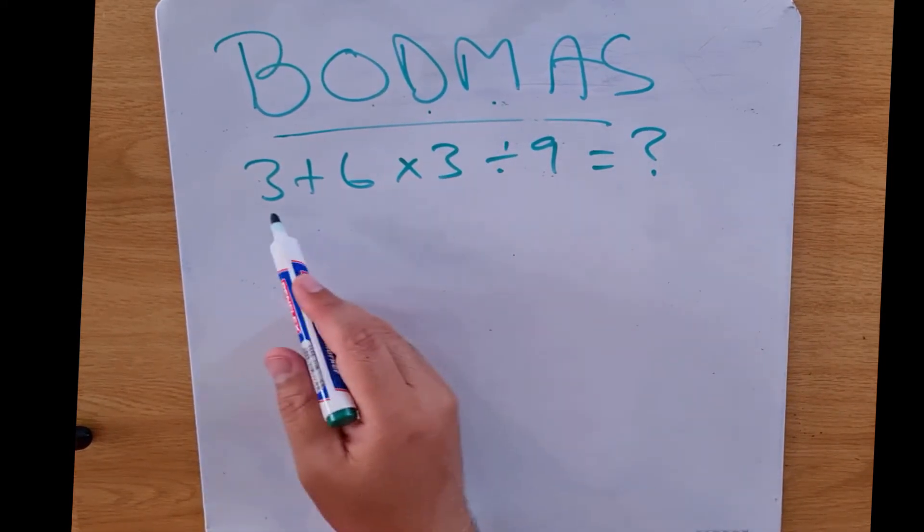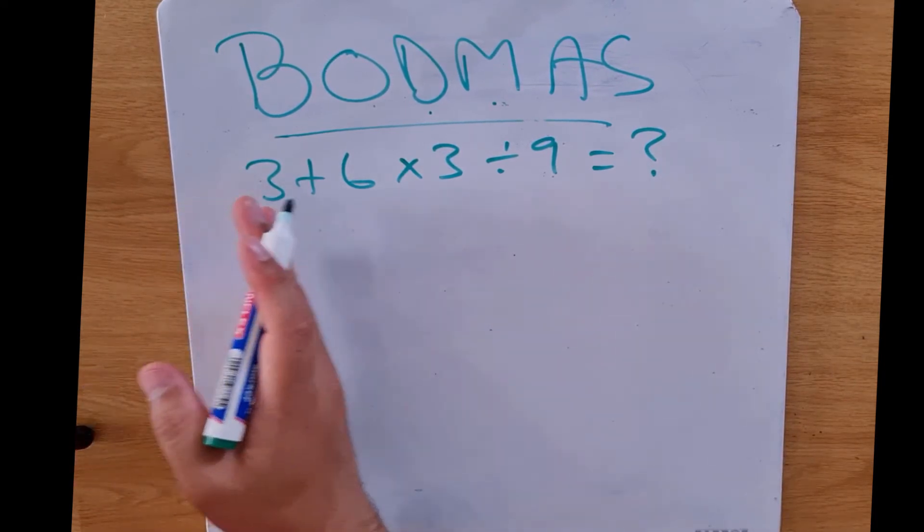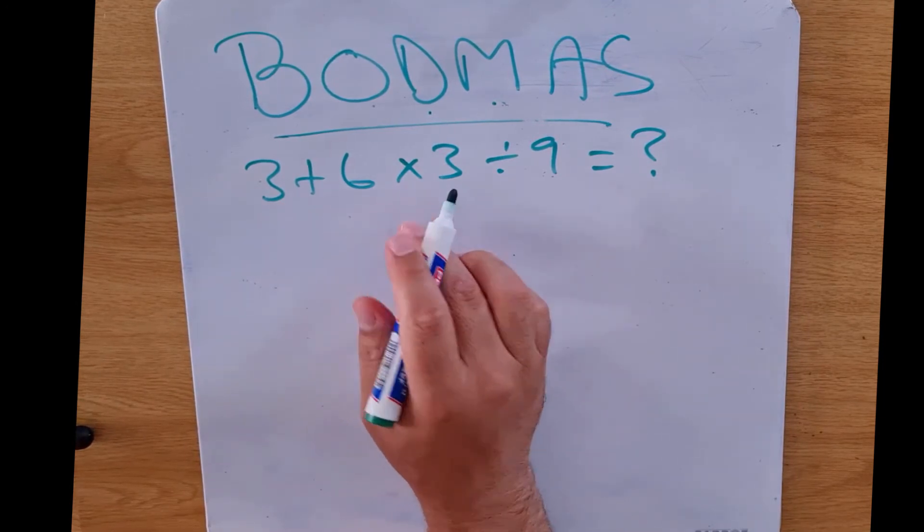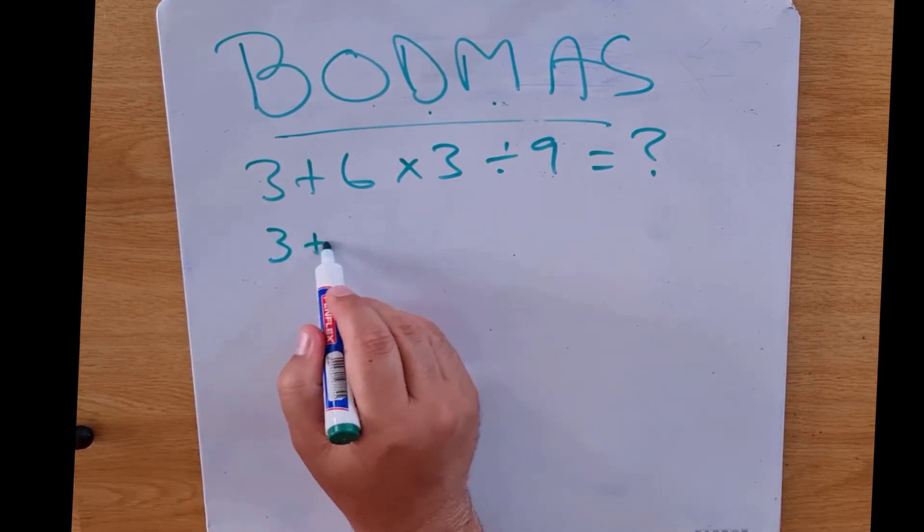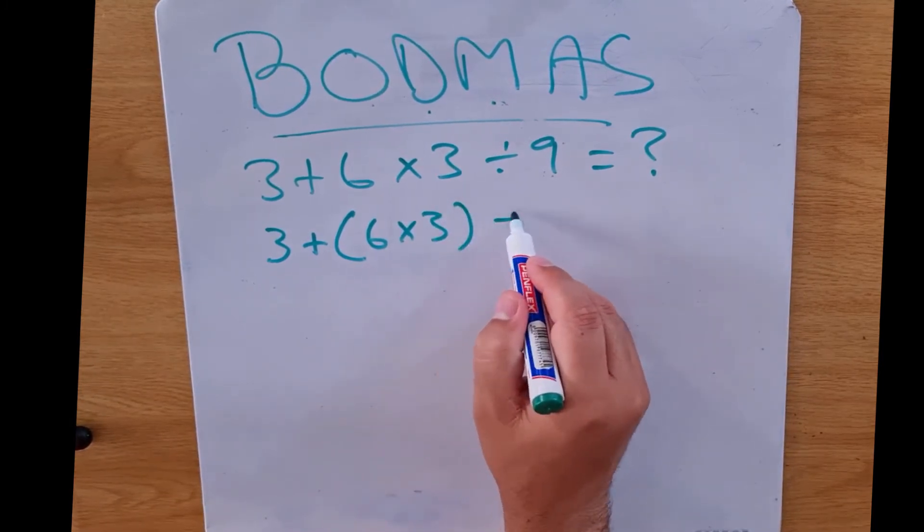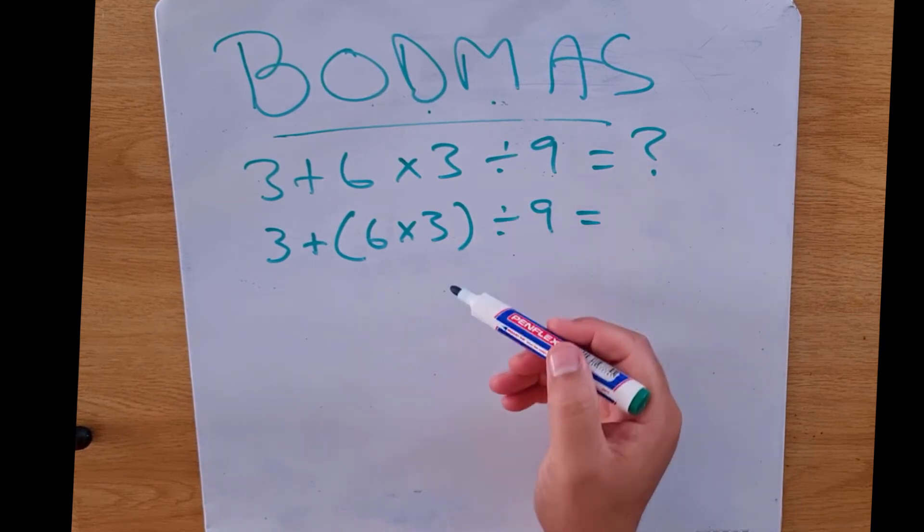However, when we look at our actual sum, we need to work from left to right. So the first thing we're actually going to come across is multiplication, and this is why it's going to be bracket 6 times 3 bracket divided by 9. So I hope you understand how we got there.